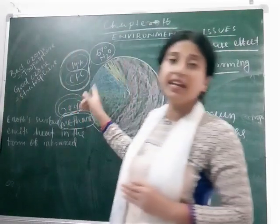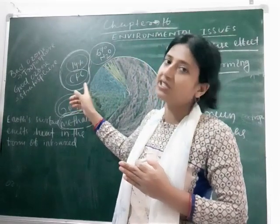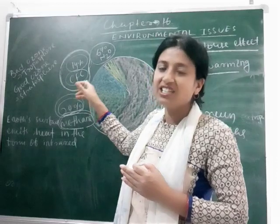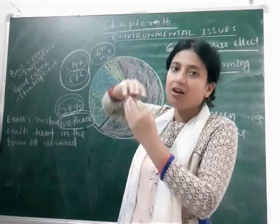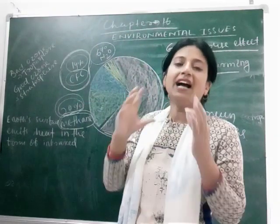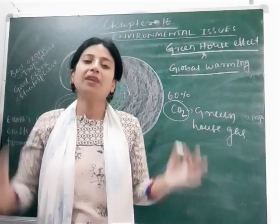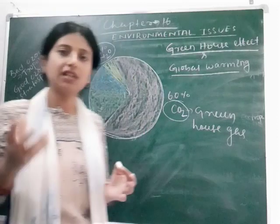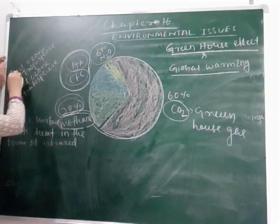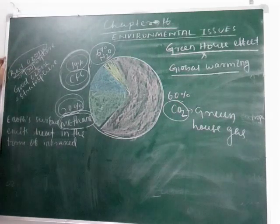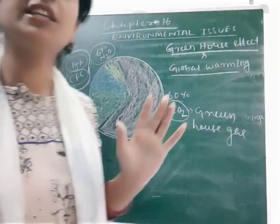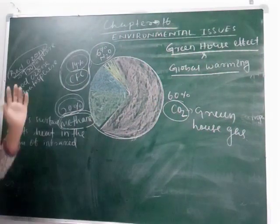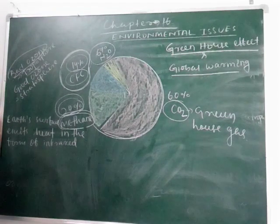We know its harmful effects but still we use it. CFC has a very light nature — when released, it directly goes towards the upper atmosphere. Our earth is protected by layers like the troposphere, stratosphere, ionosphere, etc. Bad ozone is formed in the troposphere, which allows UV radiation to reach the earth and harm organisms.